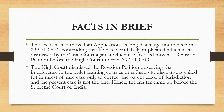Let us move on to the facts of the case. The story in this case is not important. Basically, in the instant case, the accused had moved an application seeking discharge under Section 239 of CrPC, contending that he has been falsely implicated. However, his application was dismissed by the trial court on the ground that the merits of the case can be gone into only at the later stages of the trial. Aggrieved by this, the accused moved the High Court under its revisionary jurisdiction of Section 397. However, the High Court also declined to entertain the revision petition and observed that interference in the order framing charges or refusing to discharge is called for in rarest of rare cases only, and that too only to correct the patent error of jurisdiction, and the present case is not one. Thus, the accused was constrained to move the Honourable Supreme Court of India.